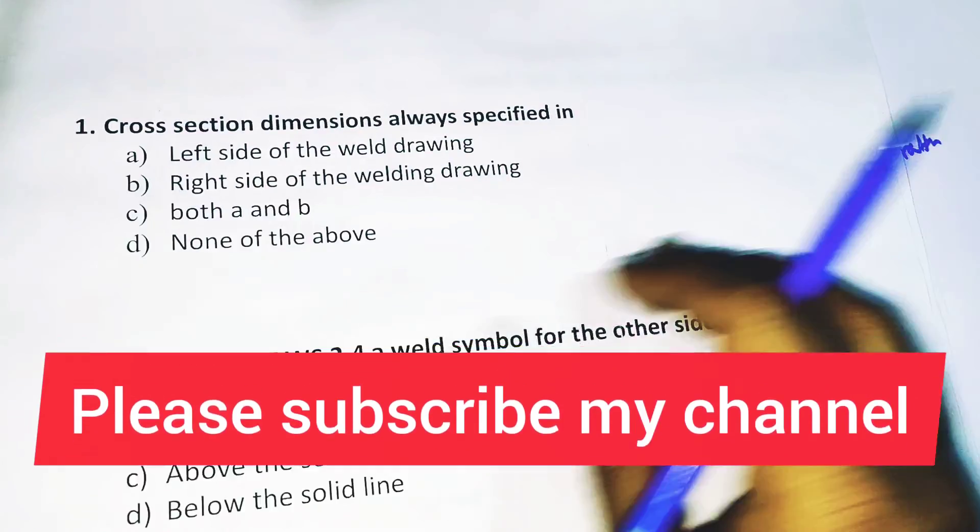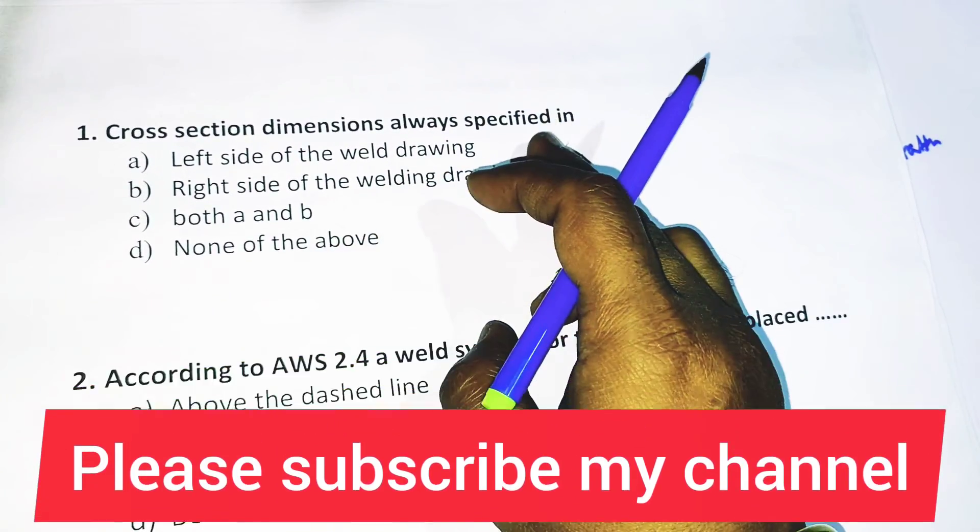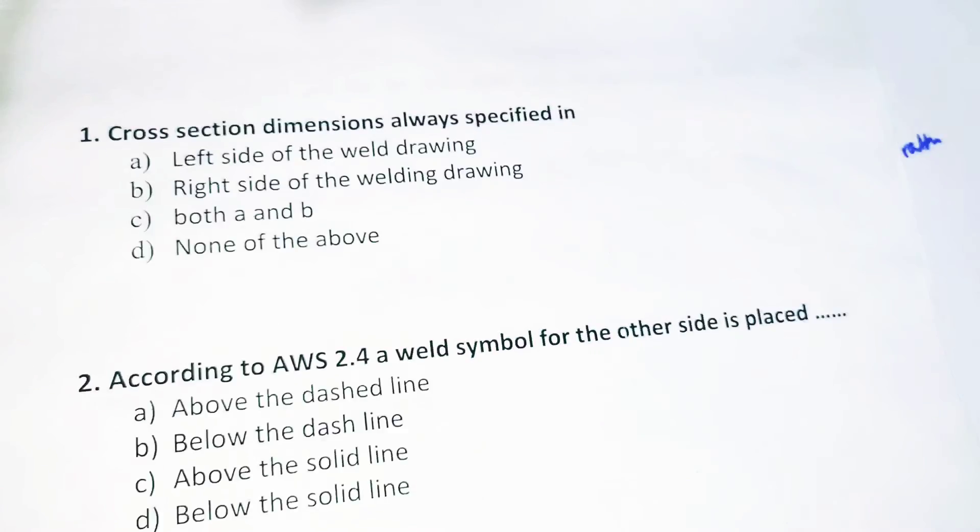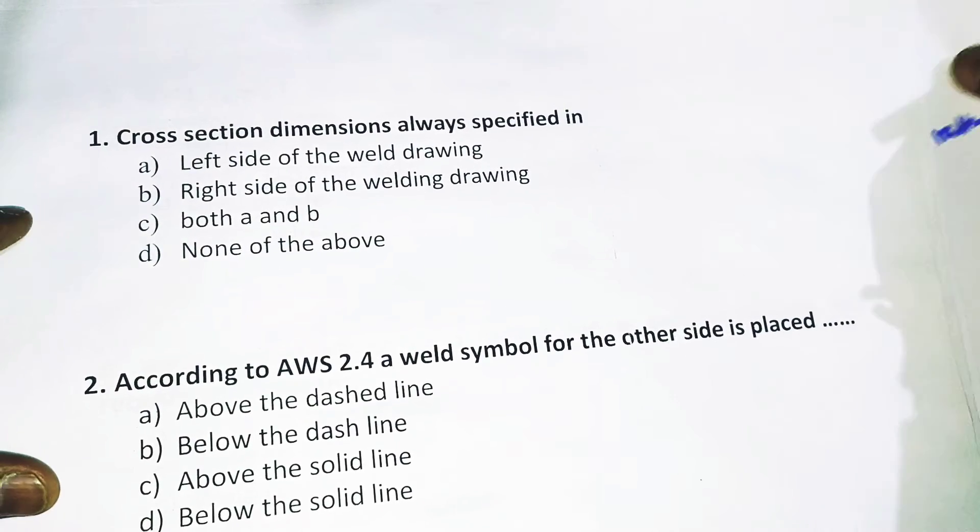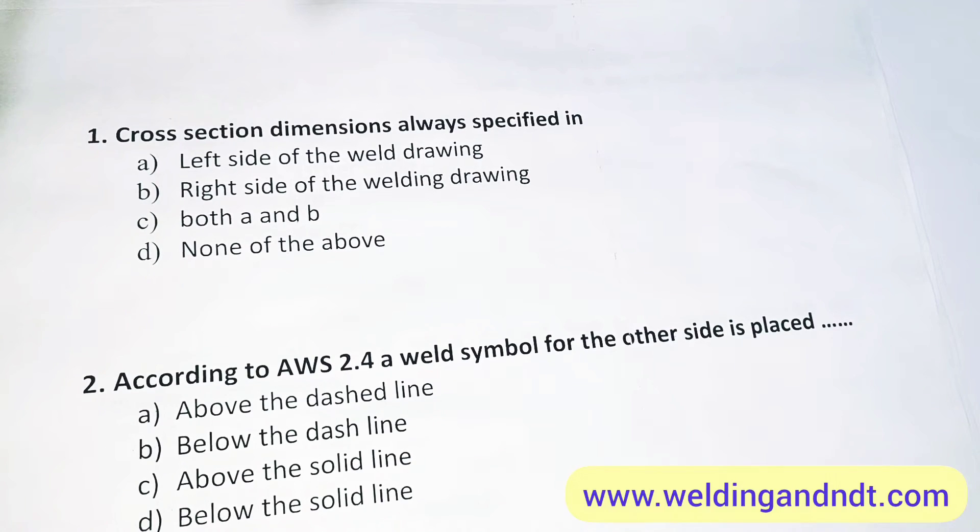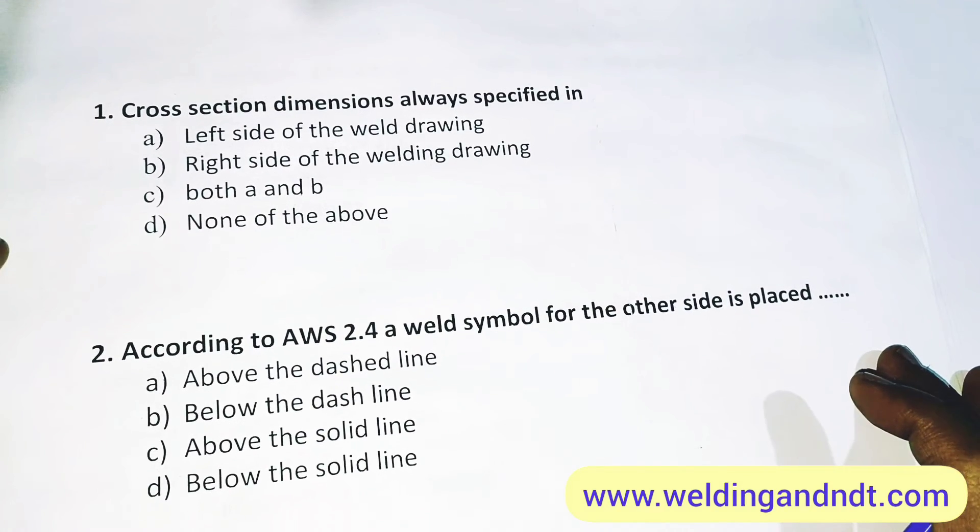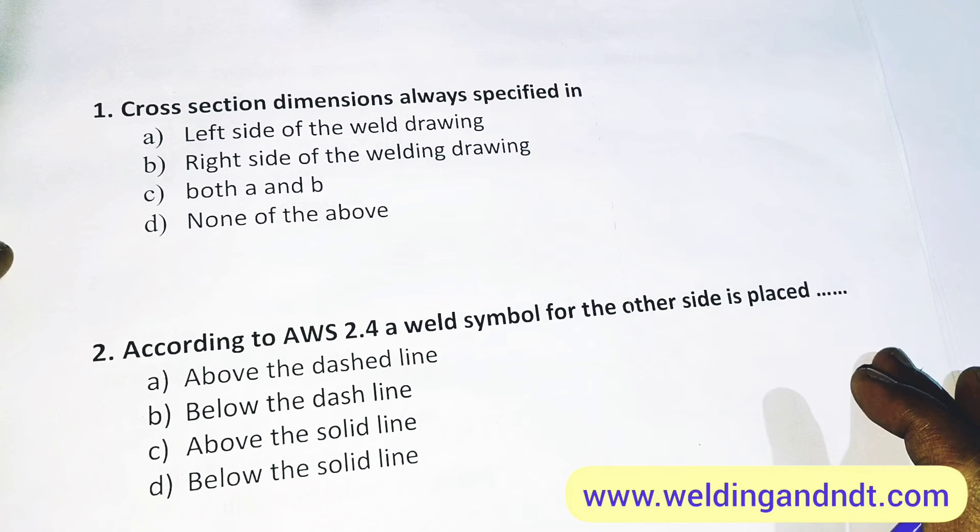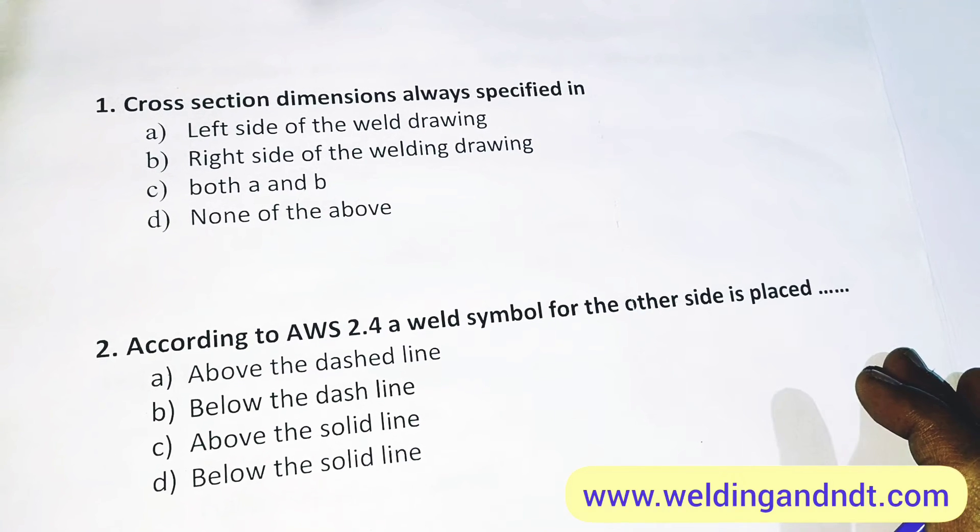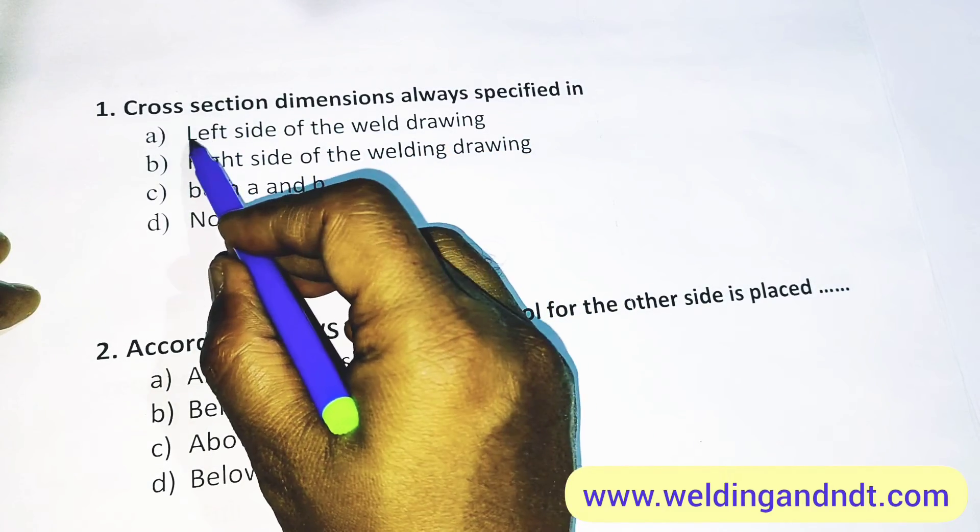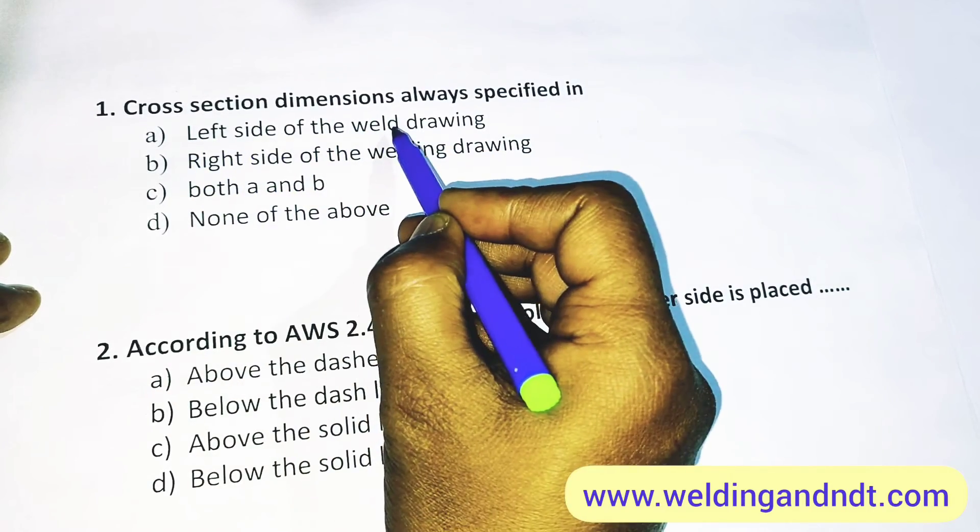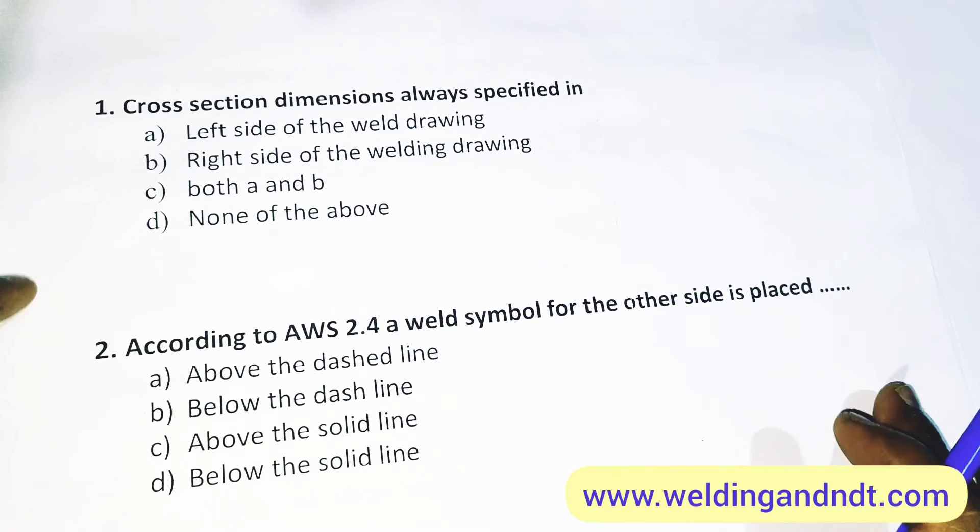So our first question is: cross section dimension always specified in? As I explained you during the lecture, the cross section dimensions like leg length or depth of penetration or the throat thickness, these are all indicated or specified on the left side of the weld drawing. So A will be the answer.